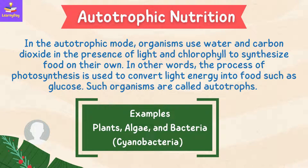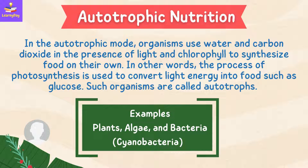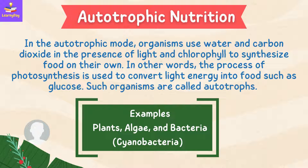In the autotrophic mode, organisms use water and carbon dioxide in the presence of light and chlorophyll to synthesize food on their own. In other words, the process of photosynthesis is used to convert light energy into food such as glucose. Such organisms which use the autotrophic mode of nutrition are called autotrophs. Examples are plants, algae, and cyanobacteria.